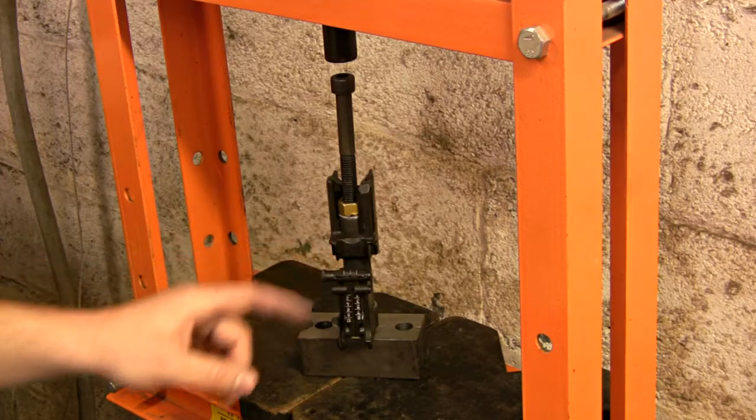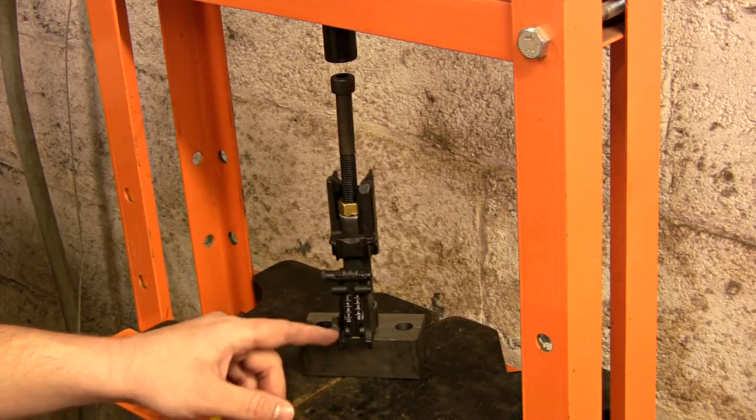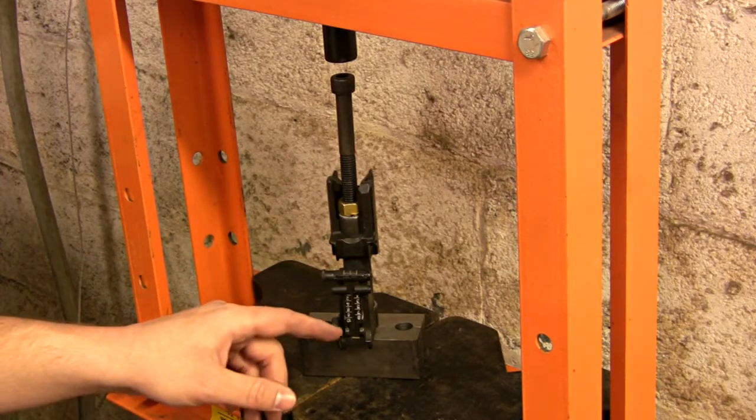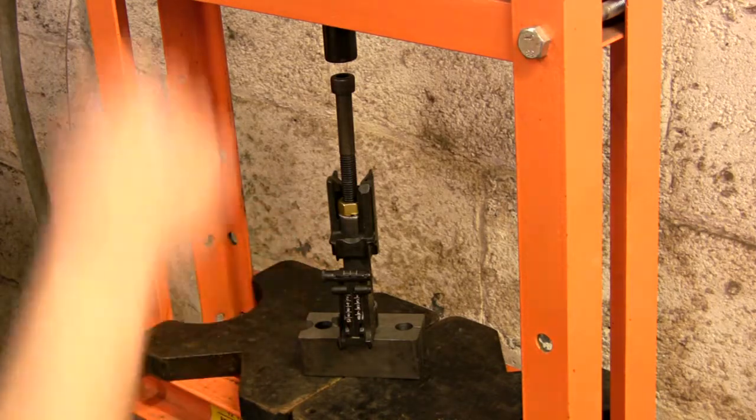Okay, we're pressing on the rear sight block. Just kind of did it by hand, basically just tapped it on there and lined it up and now we're going to press the rest of it on.